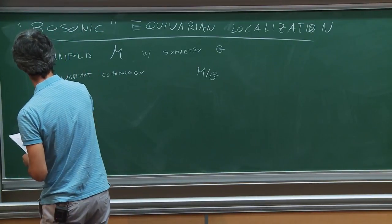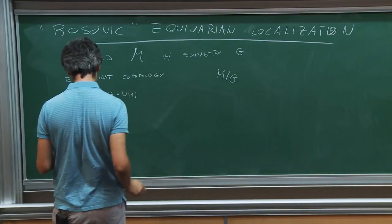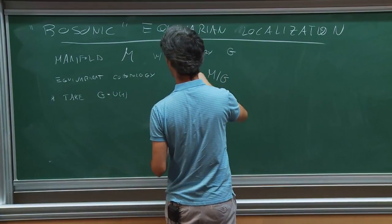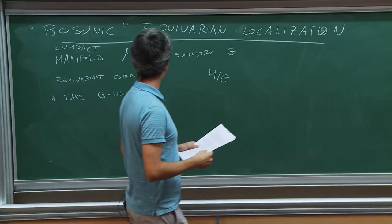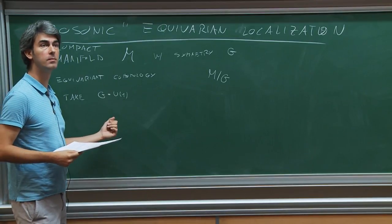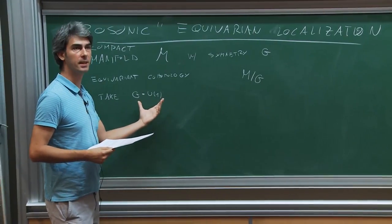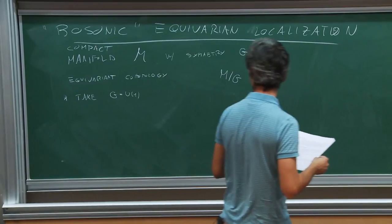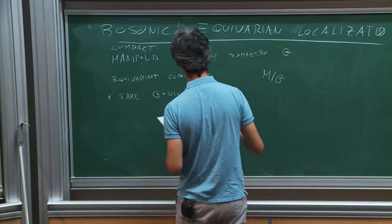We assume G is compact. So I'm taking the example in which G is U(1), which is compact. We have our compact manifold M and we take a metric on it — so this is some Riemannian manifold. In particular, we take the case in which the dimension is even, so this will be some 2L. Since we have some U(1) symmetry on it, there is a vector field that describes this symmetry.